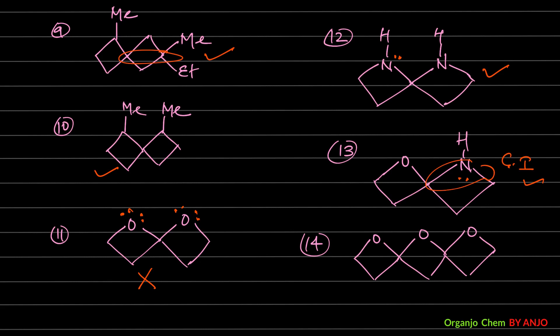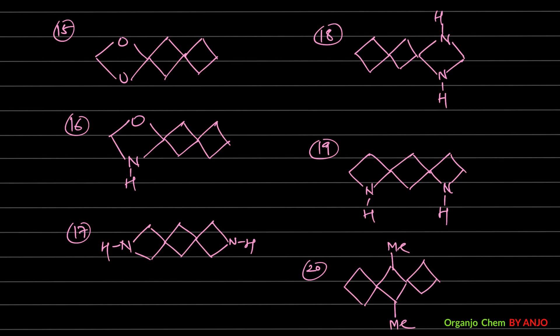Example 14: cumulative ring number is odd, and the two terminus atoms are different — GI is possible. Example 15: cumulative ring number is odd, but the two terminus atoms are the same, and similarly at the other extreme end — so GI is not possible. Example 16: cumulative ring number is odd, but the terminus atoms are the same at both ends. Checking individual rings: carbons have identical H, oxygen has identical lone pairs, and one carbon has two parts that are identical — so neither the cumulative system nor the individual rings show GI for example 16.